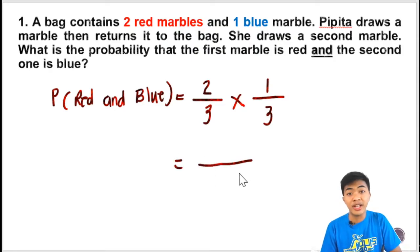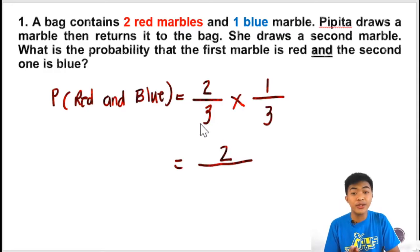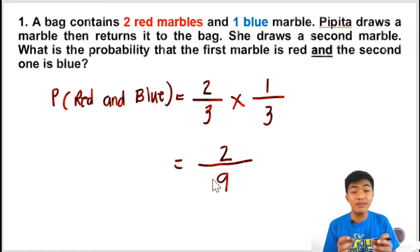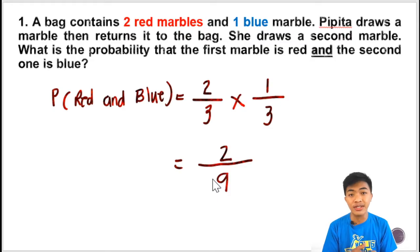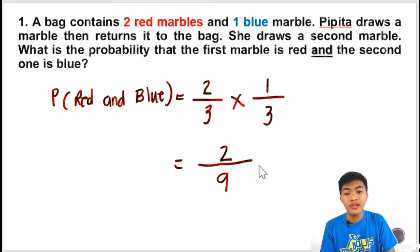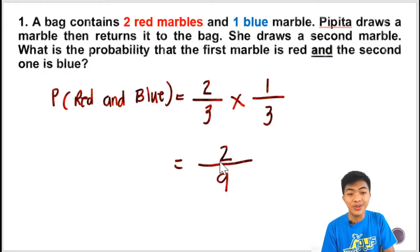We've gotten the two probabilities. The next thing to do is multiply the fractions. In multiplying fractions, just multiply numerator by numerator: two times one is two. And multiply the denominators: three times three is nine. Unlike adding and subtracting fractions where you copy the common denominator, in multiplying fractions you multiply both numerators and both denominators. So the final answer here is two over nine. The probability that she will draw red and then blue is two over nine.